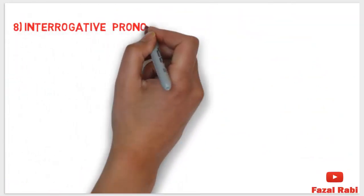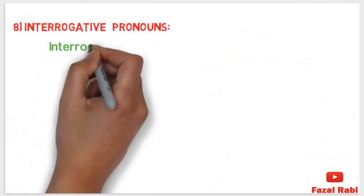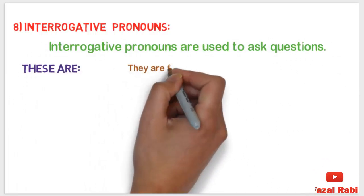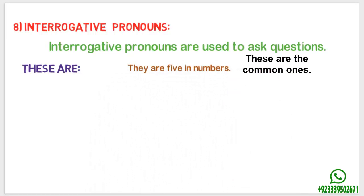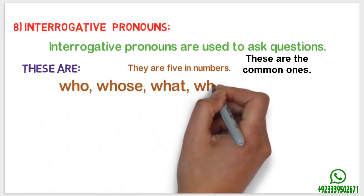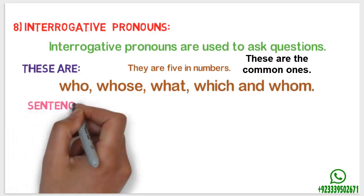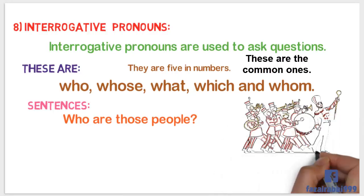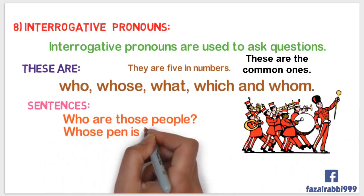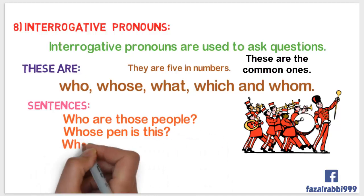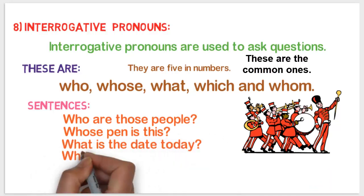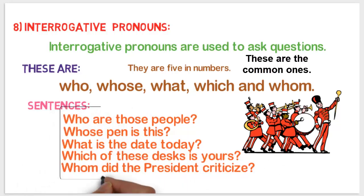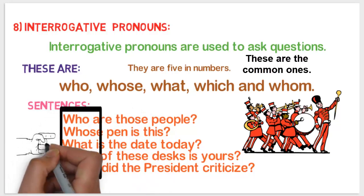Number eight: interrogative pronouns. Interrogative pronouns are used to ask questions. These are: who, whose, what, which, and whom. For example: 'Who are those people?' 'Whose pen is this?' 'What is the date today?' 'Which of these desks is yours?' 'Whom did the president criticize?' Here, all the first words of these sentences are interrogative pronouns.